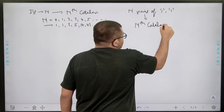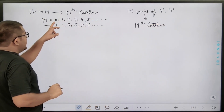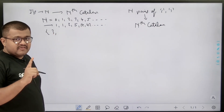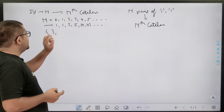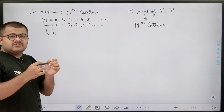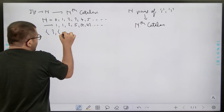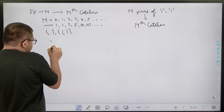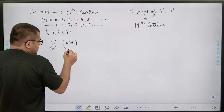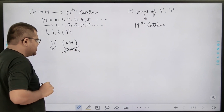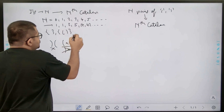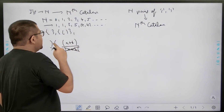For example, n = 0 means zero pairs of opening and closing brackets. There cannot be any way of arranging it other than the empty set, so the answer is 1. For n = 1, with one pair of opening and closing bracket, the number of ways to arrange them such that they are correctly matched is one way — like this. You cannot do it the other way; that is not valid.